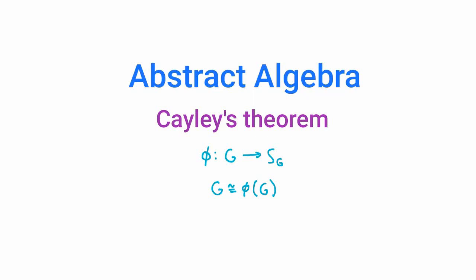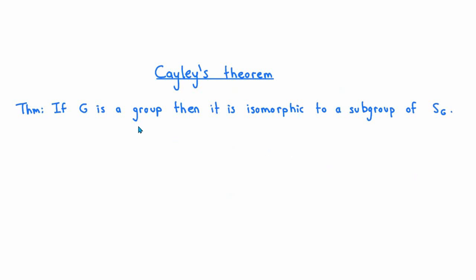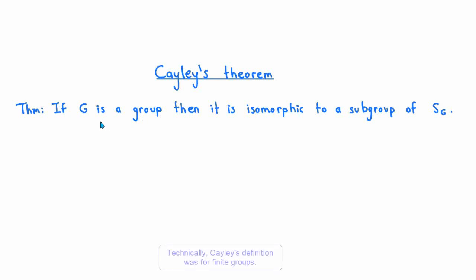In this short video, we're going to use what we learned in the previous video to give an easy proof of a theorem called Cayley's theorem, which is important mainly for historical reasons. Cayley's theorem says that any group G is isomorphic to a subgroup of the symmetric group on G. When people originally studied what we now call groups, they defined them to be non-empty subsets of bijective functions from some set to itself, closed under composition and taking inverses — in other words, what we would now call a subgroup of a symmetric group. The modern definition was introduced by Arthur Cayley in the 1800s, and this theorem shows the two definitions are actually the same.